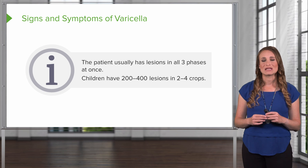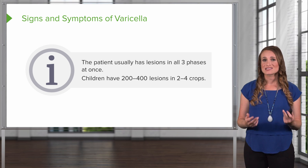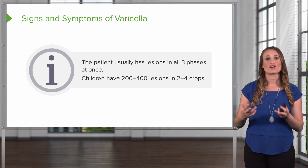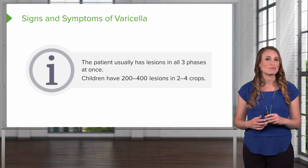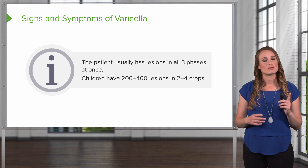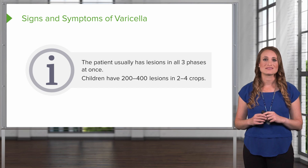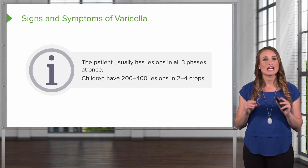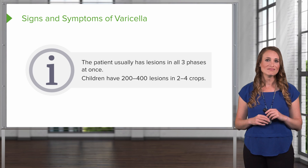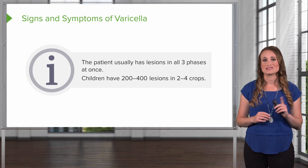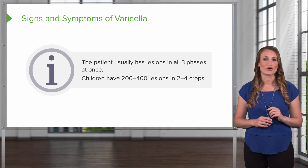I've had patients come in early in their chicken pox and it looks like they have bug bites. I ask the parents: have you noticed these appearing over a sequence of days, or did they all appear at once? Typically with bug bites, they appear all at once — the child was playing outside. But with chicken pox, each day they get new lesions. The rash has also been described as resembling a dew drop — which is the vesicle — on a rose petal — which is a little bit of erythema. Patients typically have 200 to 400 lesions in a sequence of two to four crops.